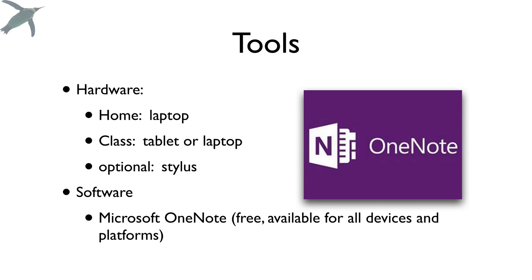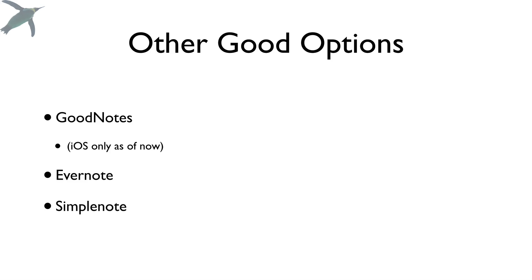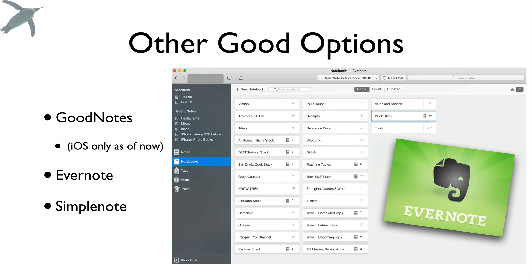I want to show you today what Microsoft OneNote looks like on the desktop as well as on my tablet, but there are other good options too. GoodNotes is pretty popular — it's iOS only as of now and it's not free. Evernote — I can't live without Evernote. I don't take notes with it, but I use it for everything else, and many of my students love it. There's a free version and a premium version.